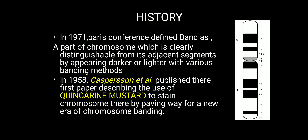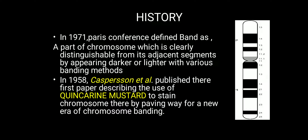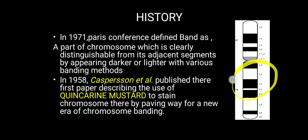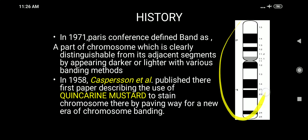For example, if we take the structure of a chromosome, you can see that there are certain dark and light regions. These regions we call bands. A part of a chromosome can be clearly differentiated from its adjacent segments because one part appears dark and the adjacent segments appear lighter, and we can differentiate the bands by doing various banding methods.